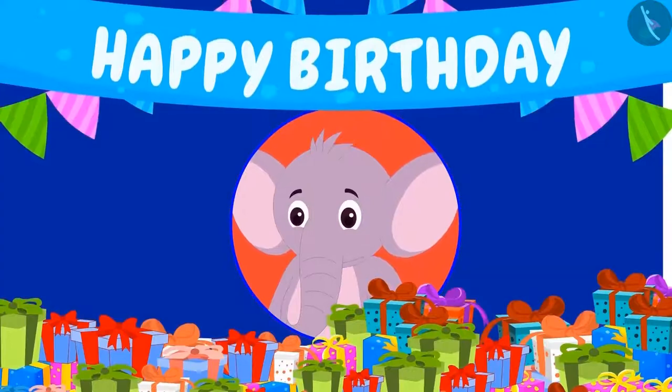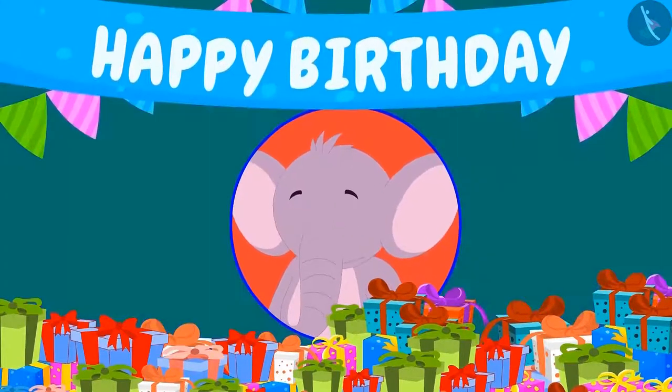Appu received lots of gifts at his party. Let's see what gifts he received. Bunny has gifted Appu 125 pencils. But because Bunny makes a mistake while counting fast, Appu is counting them again.